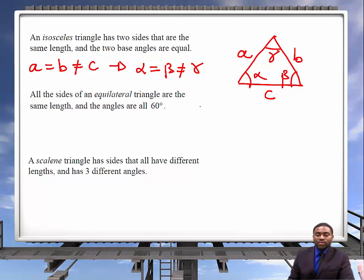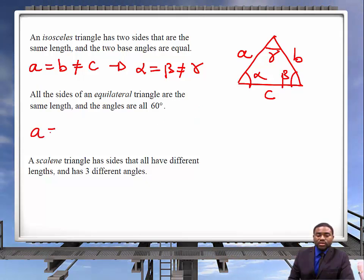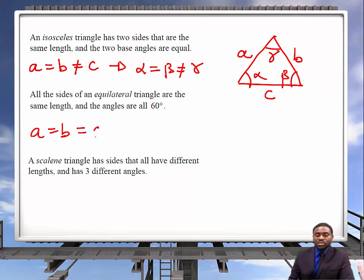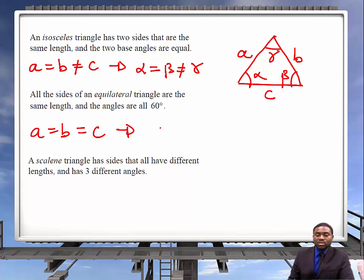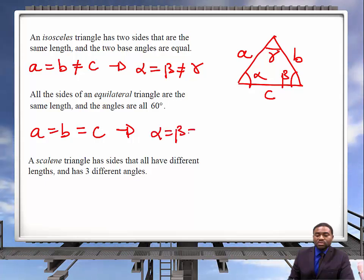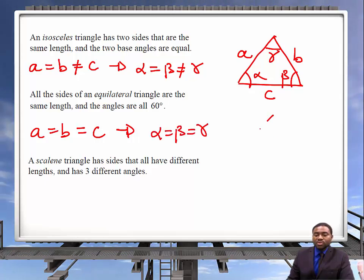An equilateral triangle is one in which A is equal to B, which is equal to C. All the sides are equal, which implies that all the angles alpha, beta, and gamma are also equal to each other.